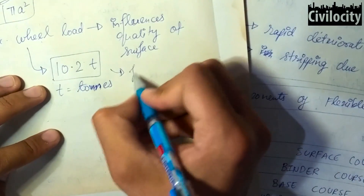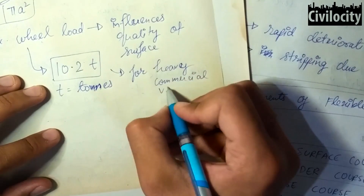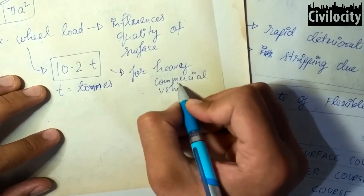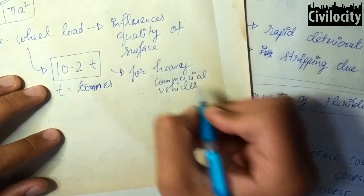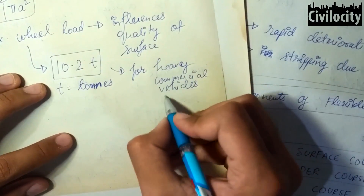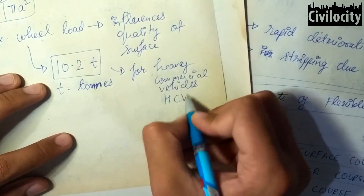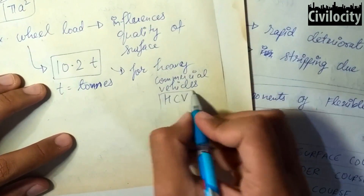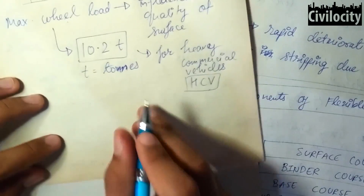There is also a factor called the rigidity factor, which is equal to the contact pressure divided by the tire pressure.